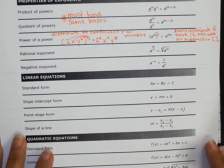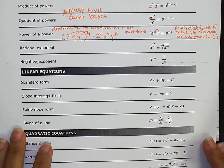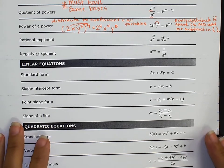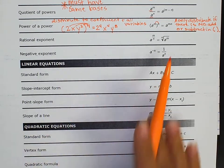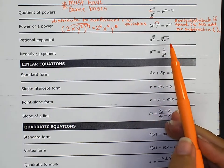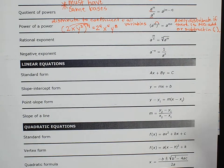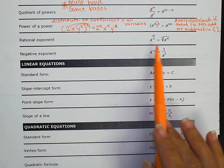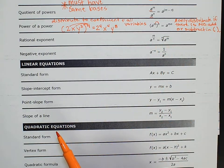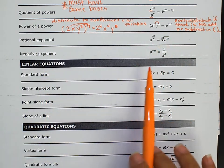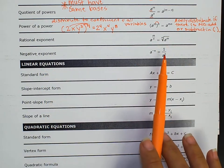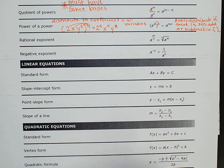Then we have rational exponents and negative exponents, and that just gives you an example. Rational exponents are very rarely referenced, but if they are, you have an example there. For negative exponents, we put a 1 over it and remove the negative.